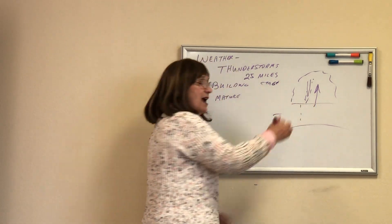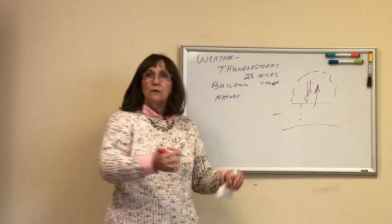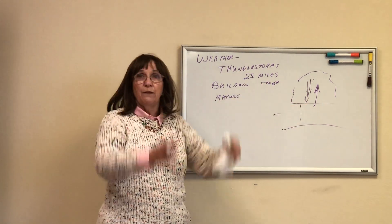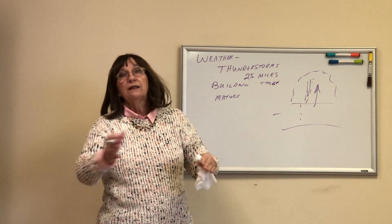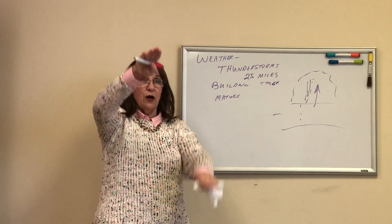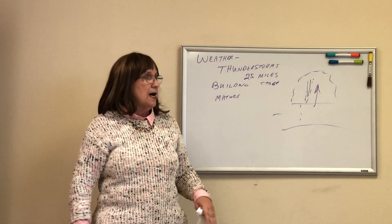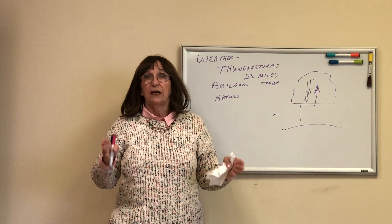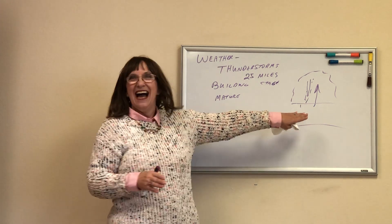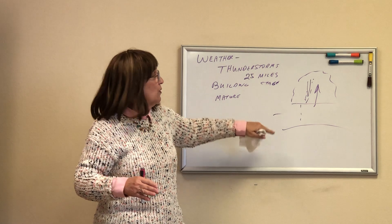In the mature stage we have updrafts and downdrafts. That raindrop or hailstone starts to fall and brings a column of air down with it, but the storm is still moving up — so now we have this up and down thing. Imagine an airplane trying to fly through that. It literally can rip your airplane apart with you in it. Stay away from thunderstorms.